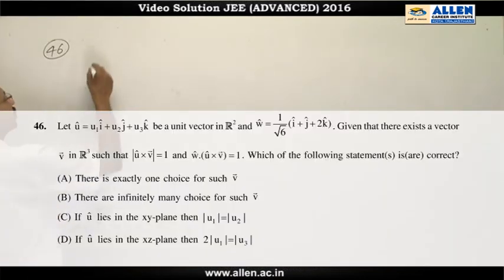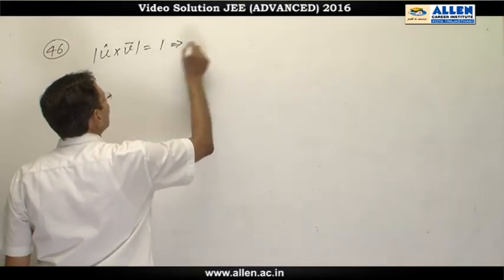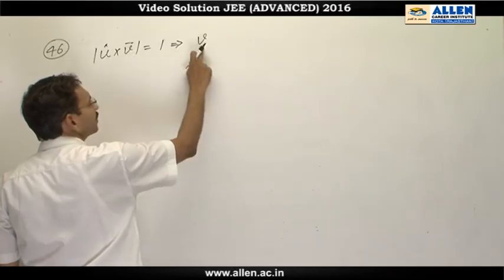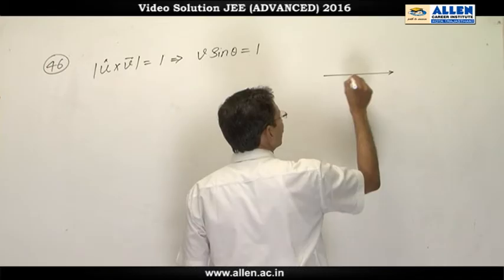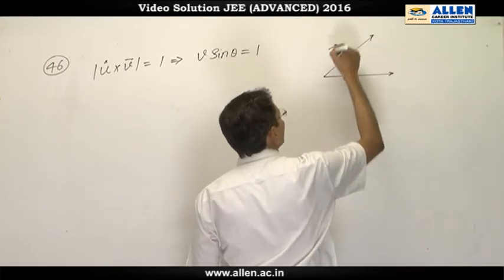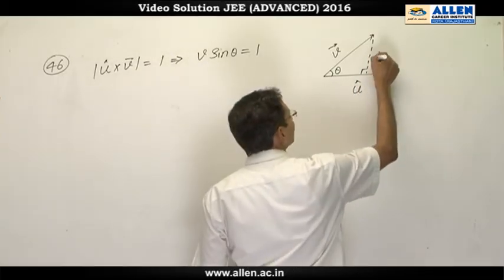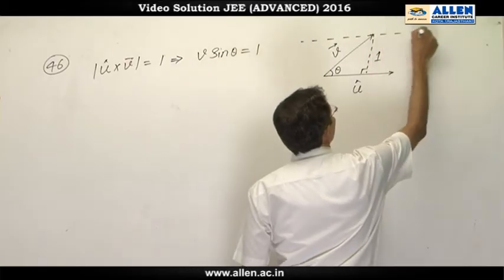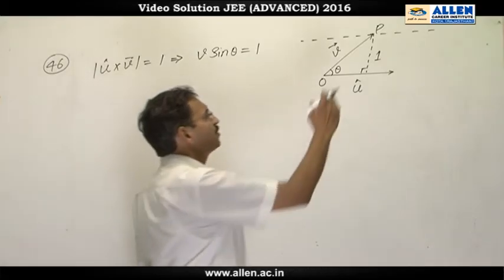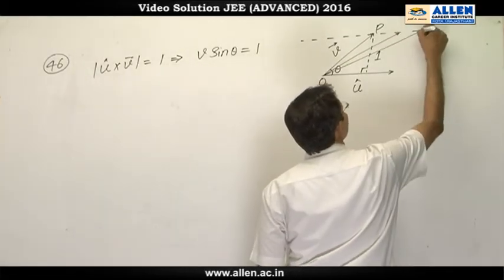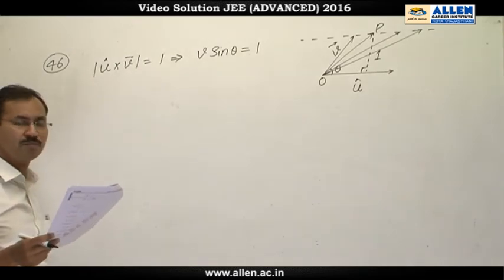In question number 46, u cap cross vector V. The magnitude is 1 which can be written as magnitude of u cap which is 1. Magnitude of V vector is say V into sin theta equals to 1. It means if this is vector u cap and this is vector V. This angle is say theta between them and this length is V sin theta and it is constant. So the head of vector V will lie on this line. If we consider 2 dimension say this is a head P then P will lie on this line and you will have infinite such vectors.